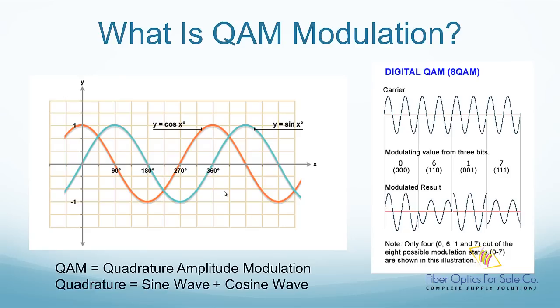QAM modulation is a combination of amplitude shift keying and phase shift keying. Both carrier waves are modulated by changing both its amplitude and phase. As shown in this eight QAM waveform, the top is a sine wave carrier.